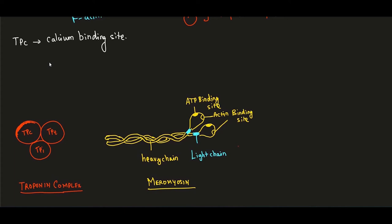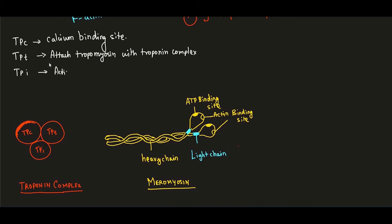The troponin complex has three subunits. TPC (troponin C) has the calcium binding site. TPT (troponin T) functions to attach tropomyosin and connects tropomyosin with the rest of the troponin complex. TPI (troponin I) functions to inhibit myosin interaction — it keeps myosin inhibited under resting conditions.